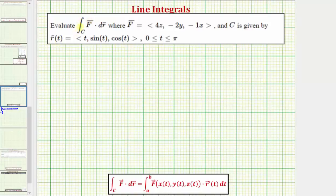We want to evaluate the line integral along the curve C of F dot dR, where the vector field F is given, and the curve C is given by R of T, where T is on the closed interval from zero to pi.